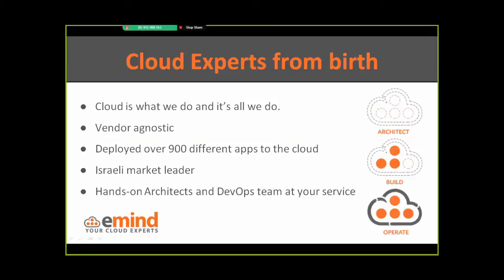A little bit about eMind — about our company and what we do. We are an expert company doing cloud, and cloud only, since 2007. This is actually when AWS was a year-old baby, with no console and only an API, for those of you who remember. We focus only on the DevOps and continuous integration delivery parts. We work with all the major cloud vendors — AWS, of course, Google Cloud, and Azure — and we're also a reseller of these platforms.